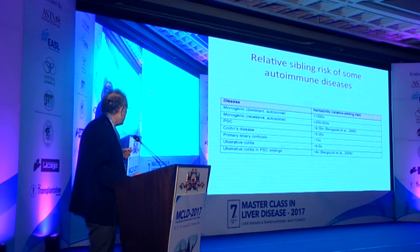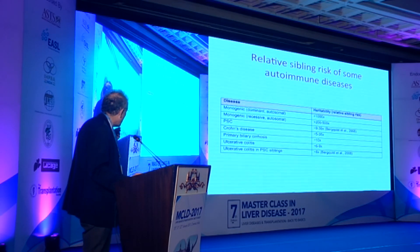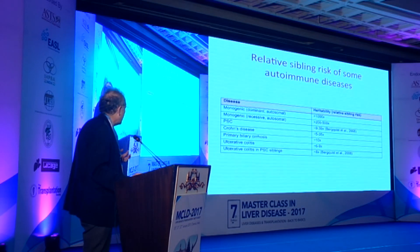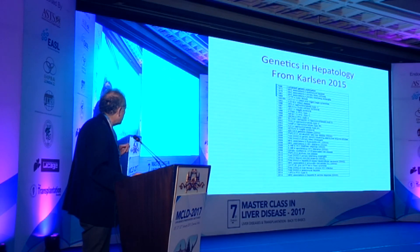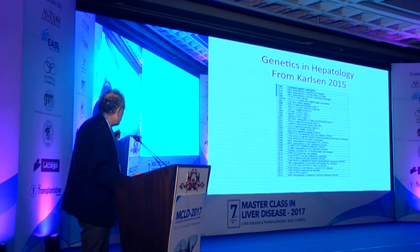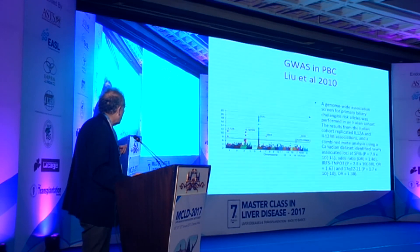There is an increased sibling risk, shown here as the Lambda S score for primary biliary cirrhosis and PSC, indicating that if you have one proband, the sibling has a much higher risk of developing the disease. Whether this means genetic and/or environmental — association does not mean causation. Genetics is increasingly impacting our understanding of liver disease, as shown going from the old MHC associations in autoimmune hepatitis down to much more specific genetic abnormalities in other diseases.